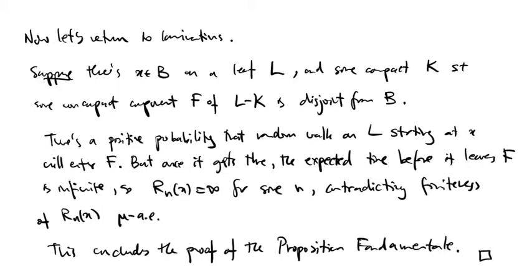Now let's prove the proposition fundamental. Supposing we have a point x in our Borel set B contained in a leaf L, and suppose there's some compact subset k of the leaf and a non-compact component f of the complement of k, which is disjoint from the Borel set B. There's a positive probability that random walk on L starting at the point x will enter f. But once it gets there, the expected time before it leaves f is infinite. And therefore, for some integer n, r sub n of x is infinite, contradicting the finiteness of r sub n of x mu almost everywhere.